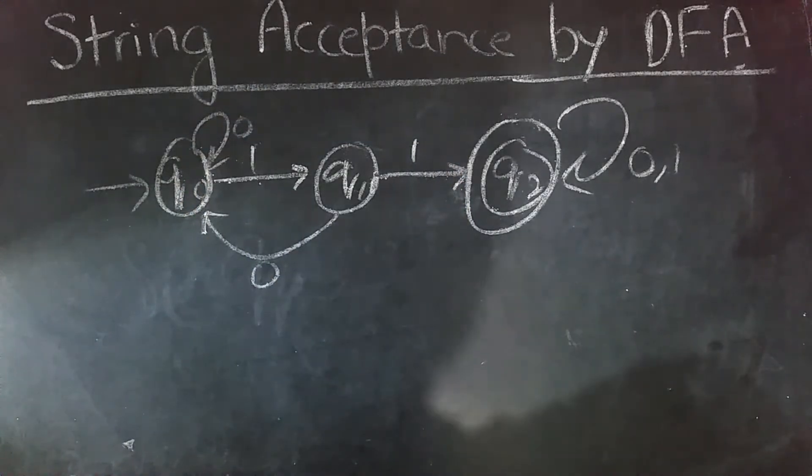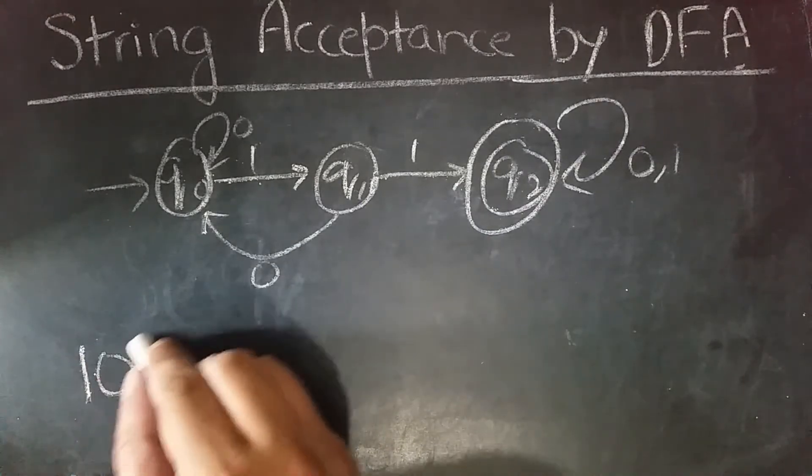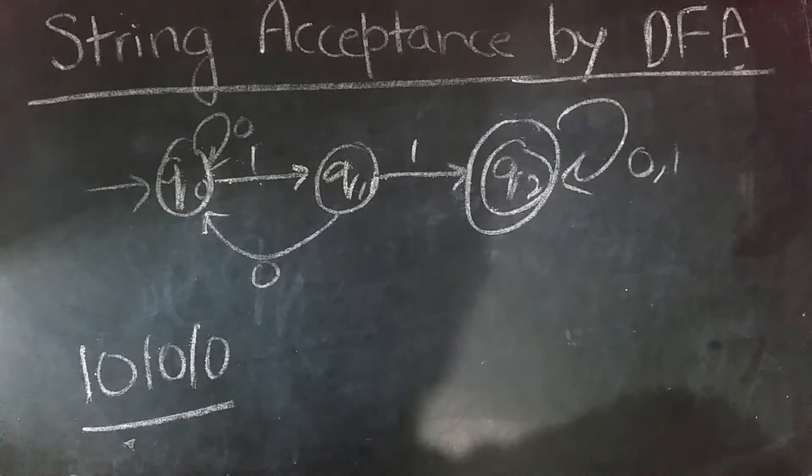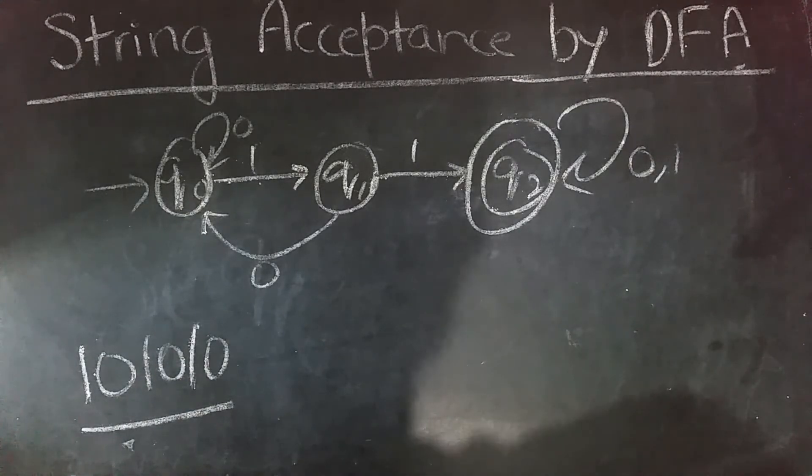Let's say this is the transition diagram of the DFA, and we have to see whether this string is accepted by the deterministic finite automata or not. We can use the transition diagram for this.